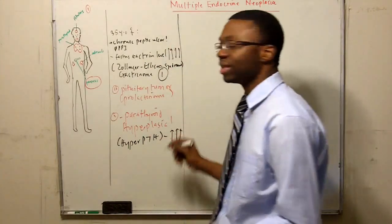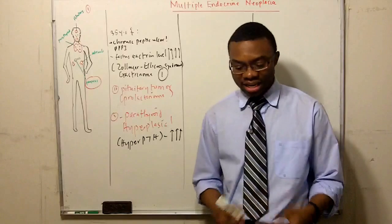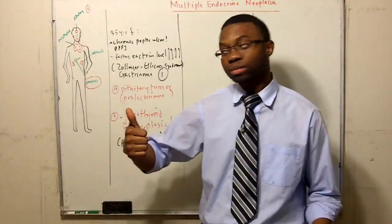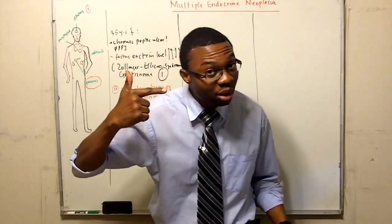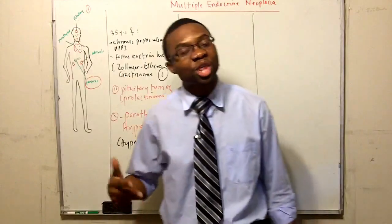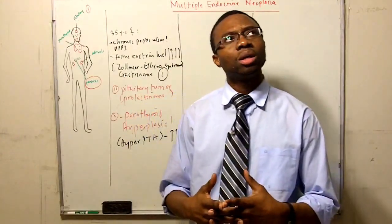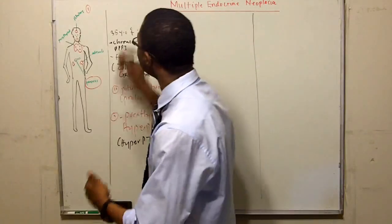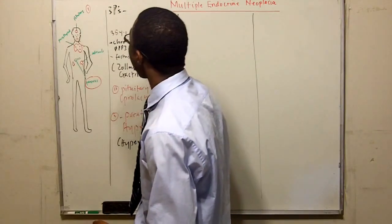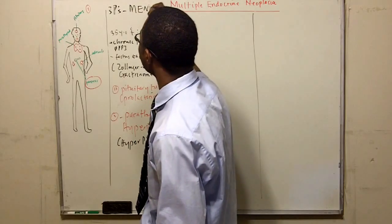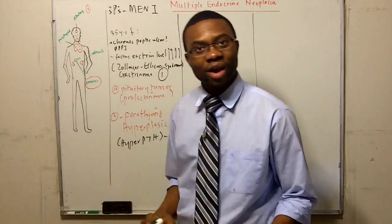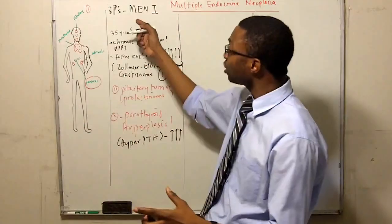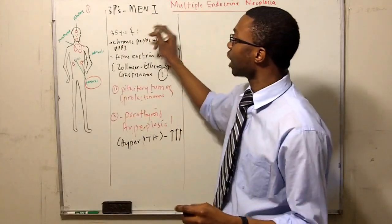If I check the PTH levels, guess what? It's going to be elevated. We took all these three syndromes. She had a pancreatic tumor, pituitary tumor, and a parathyroid tumor. We call them the three P's. And those three P's, I call one syndrome. We always find all these three in a certain amount of patients. So we call them multiple endocrine neoplasia type one.